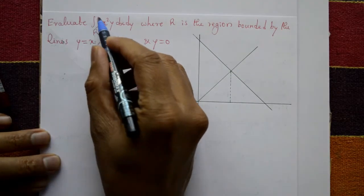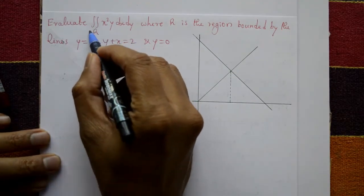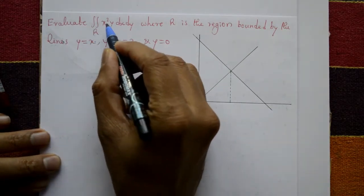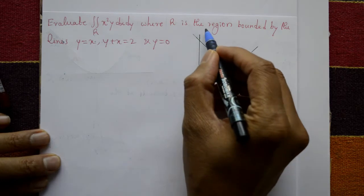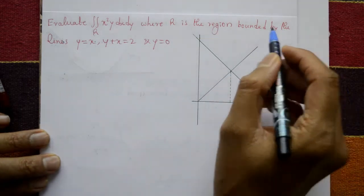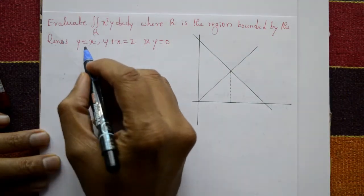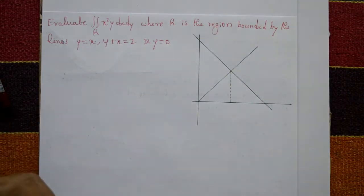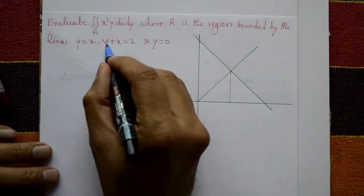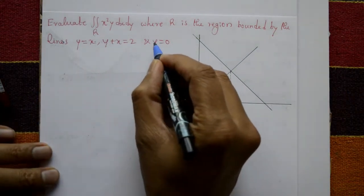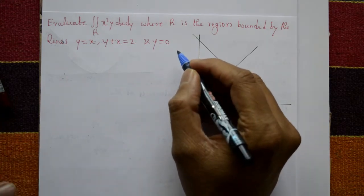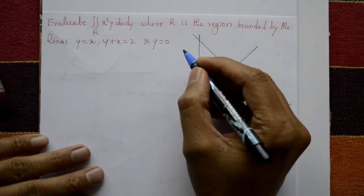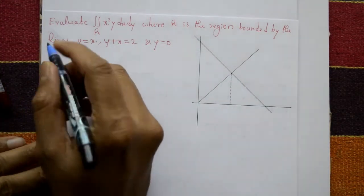Evaluate the double integral over region r of x squared y dx dy, where r is the region bounded by the lines y equals x, y plus x equals 2, and y equals 0.